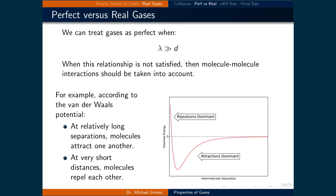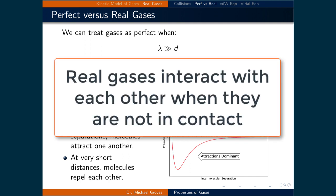Contrary to what the kinetic model of gases assumes, which is what the ideal gas law is based on, we know that molecules do interact with each other when they are not in contact with one another.